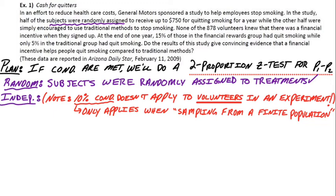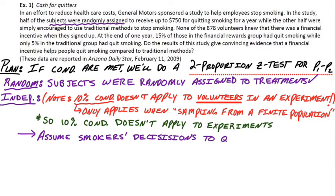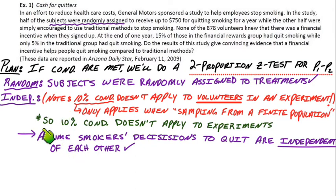We had 878 volunteers that signed up — that's an important point. The 10% condition doesn't apply to experiments. So how do we show independence? It's actually easier than you might think. We just state that smokers' decisions don't affect one another, so they're independent of each other. We can assume smokers' decisions to quit are independent of each other. We can't use the 10% condition because we weren't sampling from some population. The independence condition is handled differently for experiments.